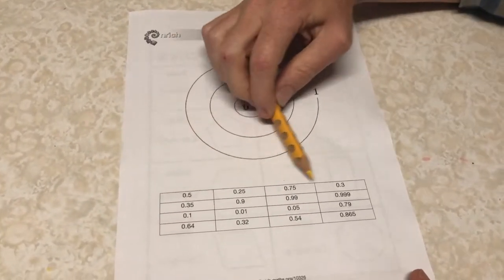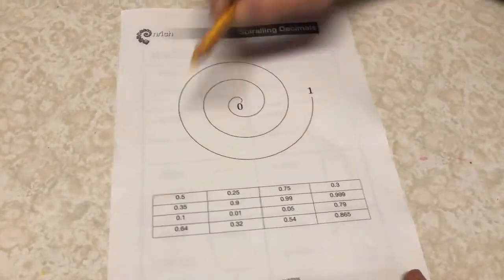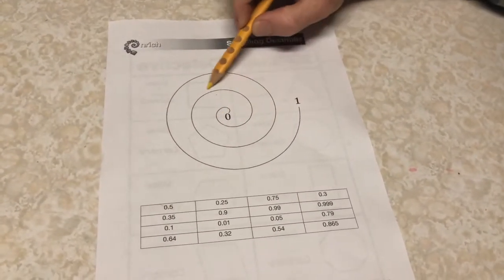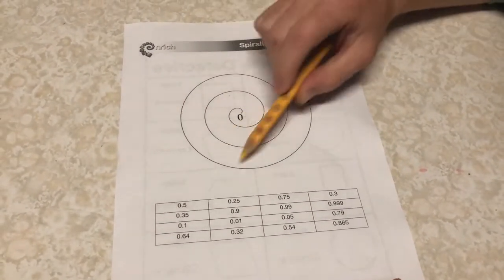So you can see here we've got a selection of decimal fractions down the bottom and this is like a number line and the challenge is that it's done in a spiral.